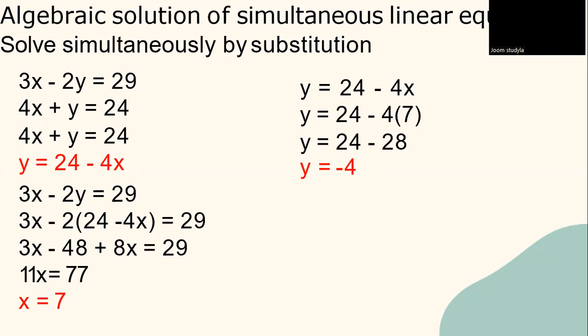Let's look at one of the examples. Algebraic solutions of simultaneous linear equations - solve simultaneously by substitution given the value of 3x minus 2y equals to 29 and 4x plus y equals to 24. Let's solve to get the value of y. 4x plus y equals to 24, and y is actually 24 minus 4x.